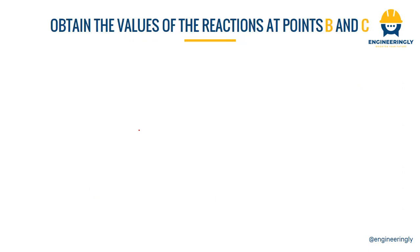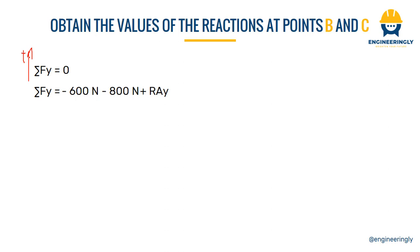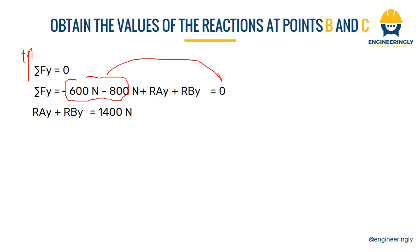So we will write down the summation of forces in the y direction equal to zero. For this problem we will assume the upward direction in y as positive, which means forces acting in the opposite direction will have a negative sign. So we will have minus 600 Newton minus 800 Newton plus the reaction at point A in the y direction plus the reaction at point B in the y direction equal to zero. From here we can write down an equation where R_Ay plus R_By equals 1400 Newtons.